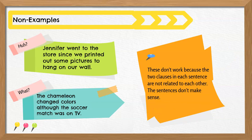Here are two more non-examples. These sentences are written correctly, but they don't make sense. Jennifer went to the store since we printed out some pictures to hang on our wall — Jennifer went to the store has nothing to do with printing out pictures. The chameleon changed colors, although the soccer match was on TV. Again, these clauses are not related. The point is, if you want to create a complex sentence, you can't just pick a conjunction and put two random ideas together. They must be related and must use the conjunction to show that relationship.